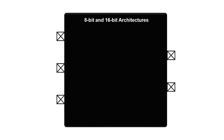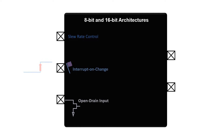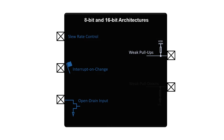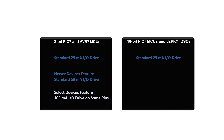Additional pin capabilities on many 8 and 16-bit architectures include the ability to apply pin signal slew rate control, interrupt on change, an open drain control option, and the ability to apply on-chip weak pull-ups, with 16-bit products also featuring weak pull-down options on select devices. In applications where high-current sourcing or sinking is required on I/O pins, both architectures boast 25mA source/sink capabilities. Recent 8-bit devices feature 50mA source/sink currents on most pins, with some select 8-bit devices featuring 100mA source/sink capable pins.